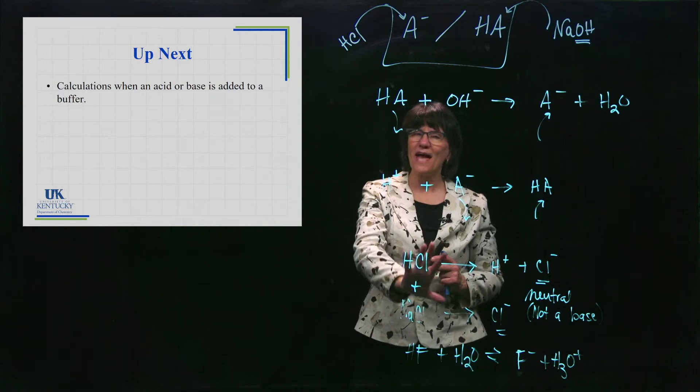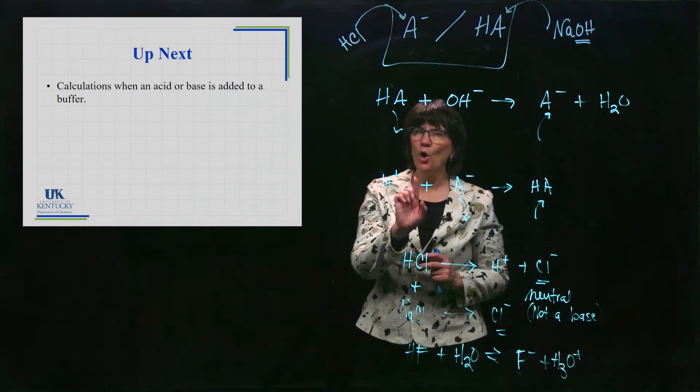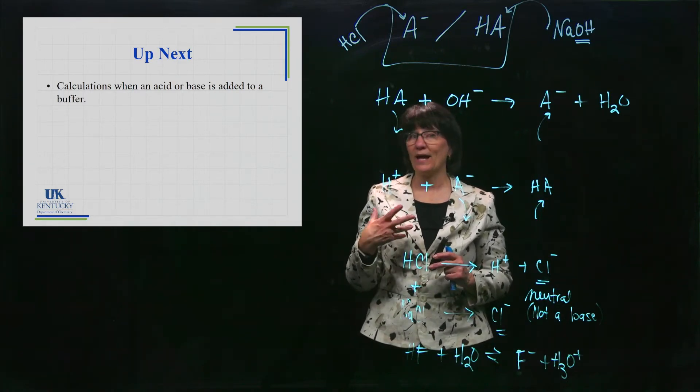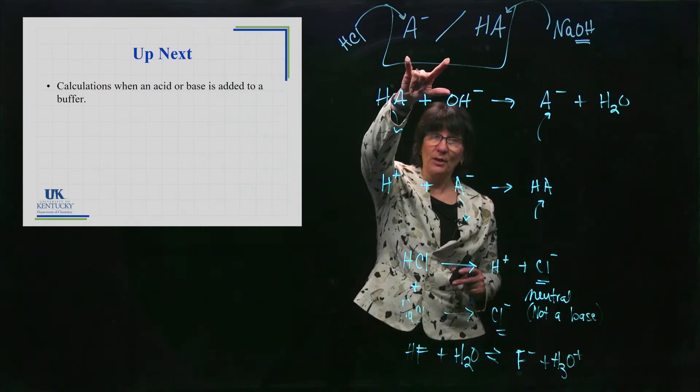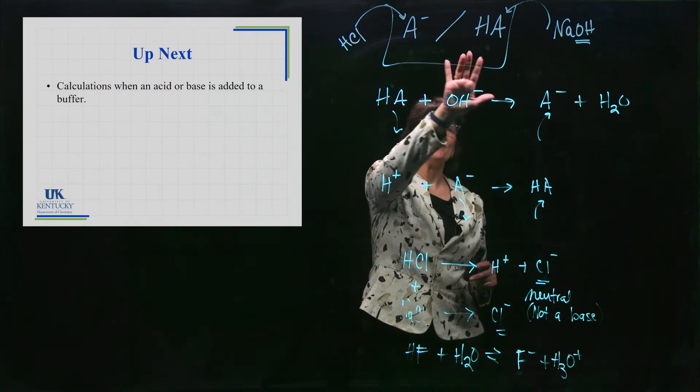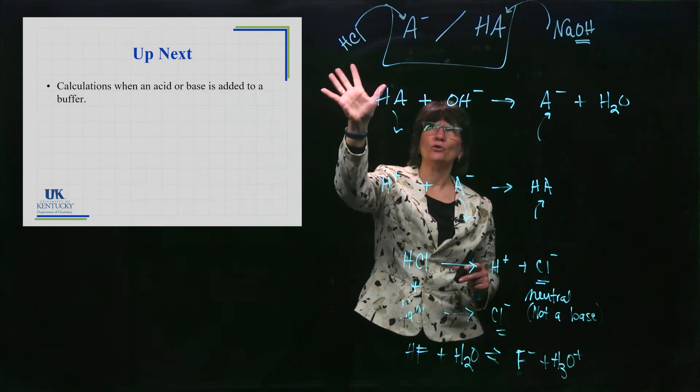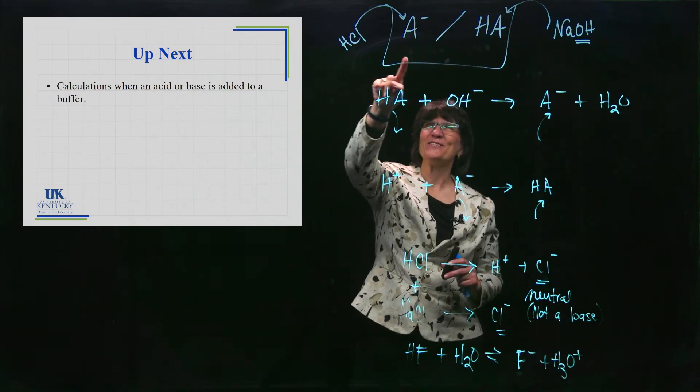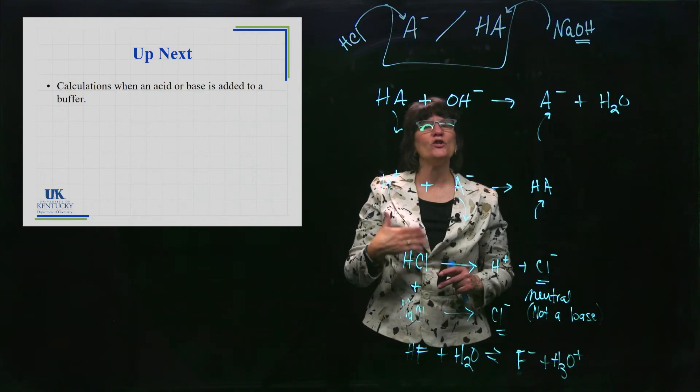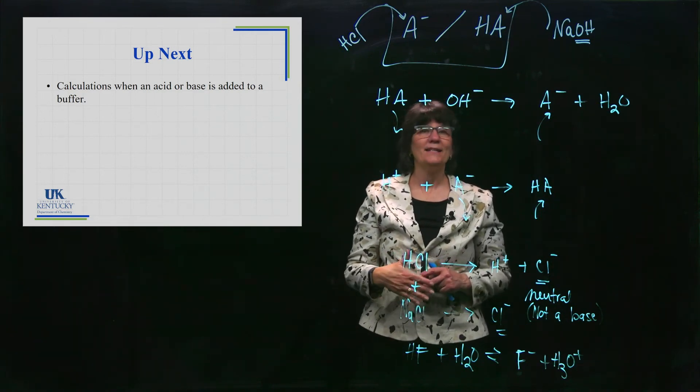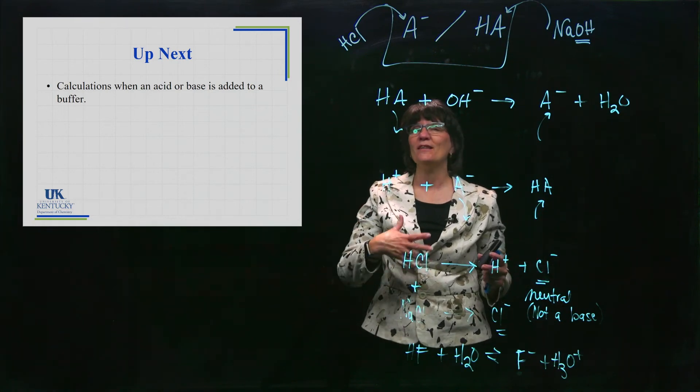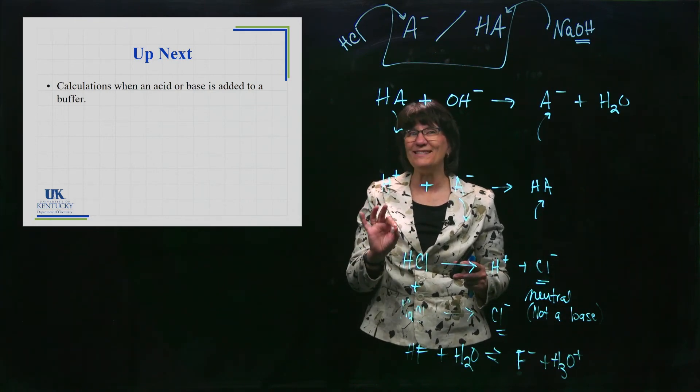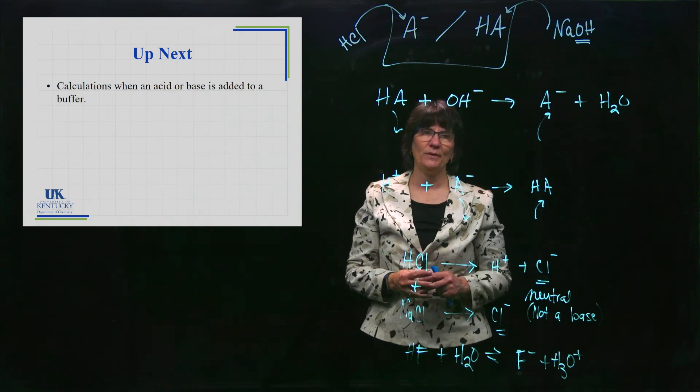So we know how it works. We know what's happening on the molecular level. What we're going to do next is do actual calculations where we're going to take a buffer of some sort. We're going to add an acid to it or we're going to add a base to it. We're going to calculate the pH of the new solution. Did it not change it at all? Did it change it a little bit? We'll be able to see the numerical values of it resisting change to pH.